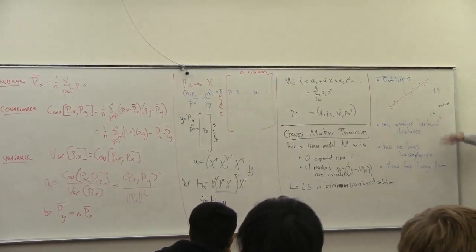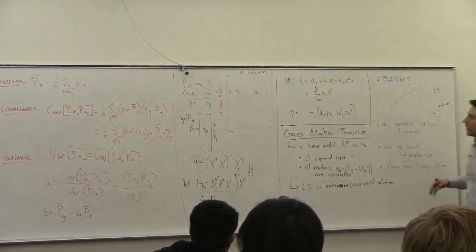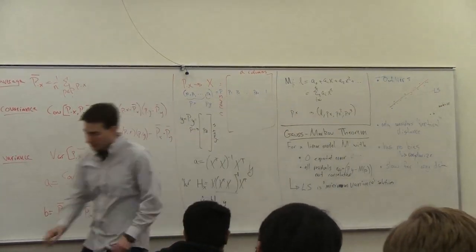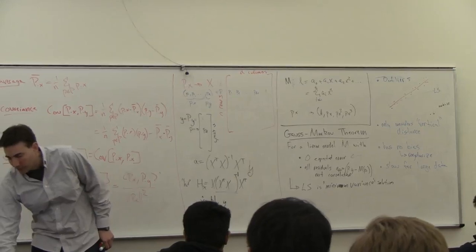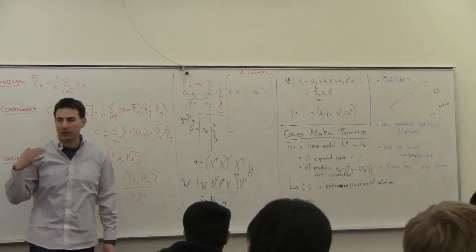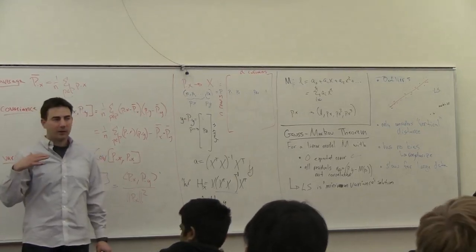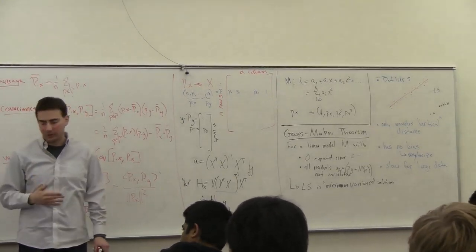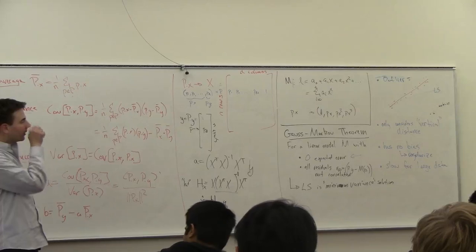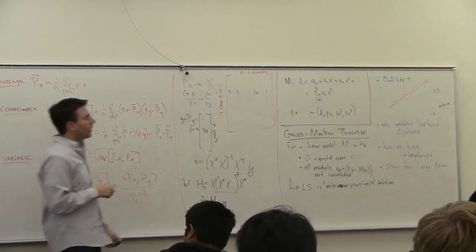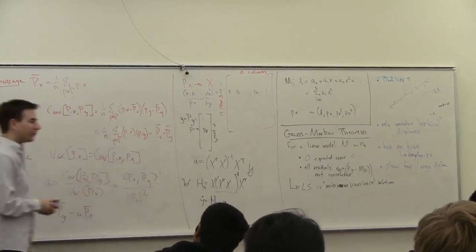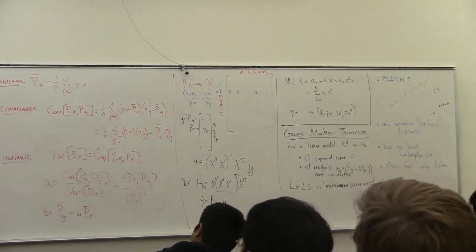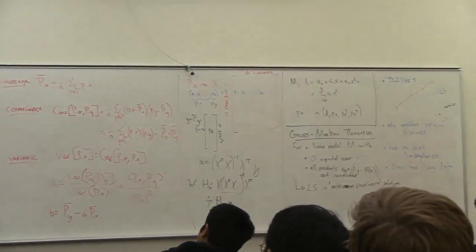So those are the main four issues I've identified. I'm going to sketch some of the solutions to them, spending less to more time on each. The first one I'll talk about is a way of dealing with outliers. One way of dealing with outliers is to use least absolute differences.